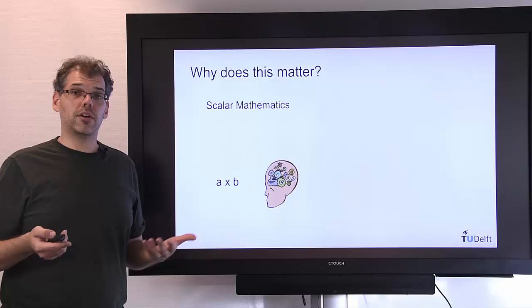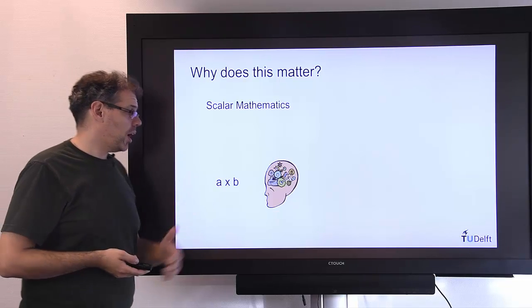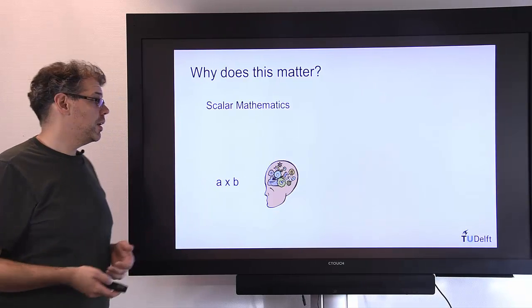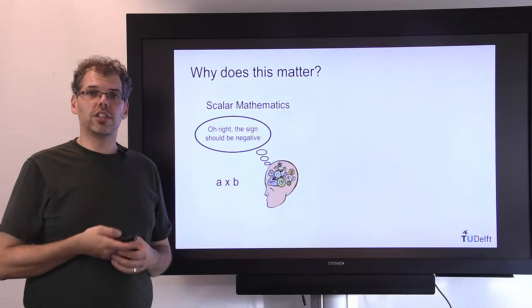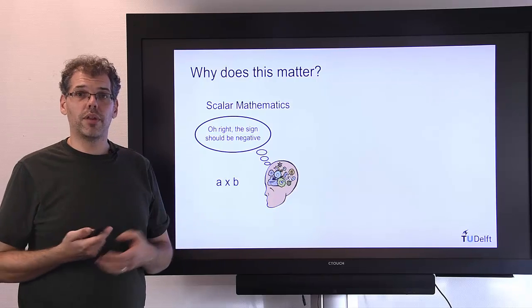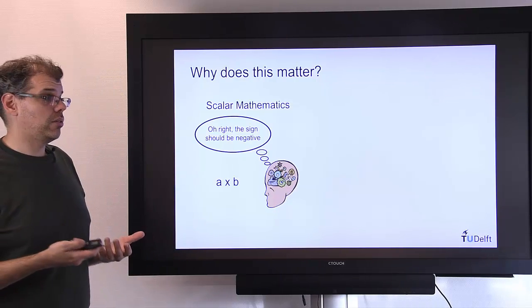In this course, we're doing scalar mathematics. We multiply two numbers together, a and b. We can think about the problem a little bit and sort of be like, OK, according to our convention, it should actually be negative rather than positive. And we can sort that out ourselves.